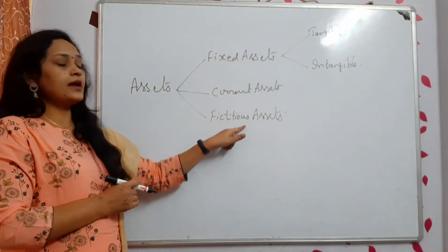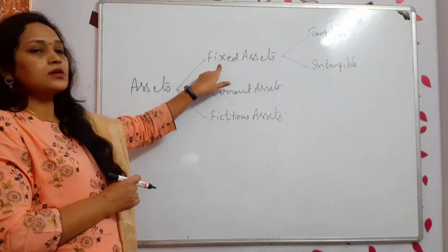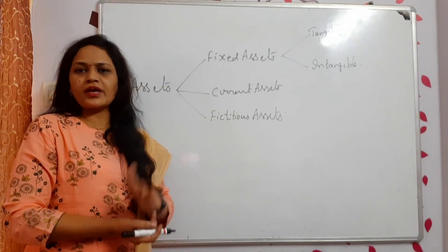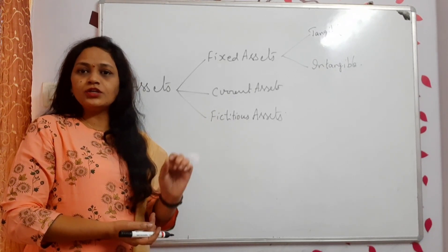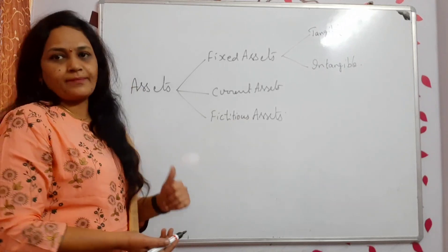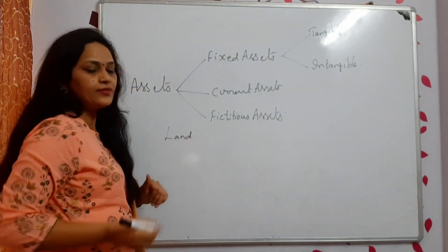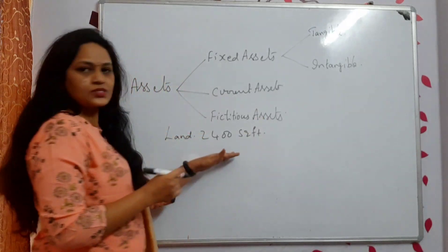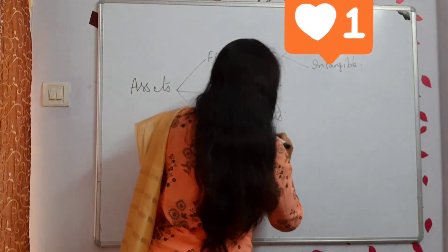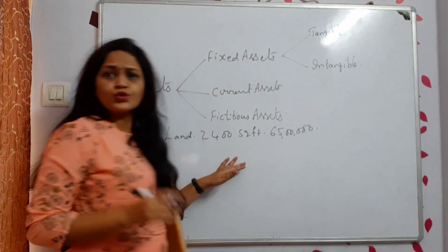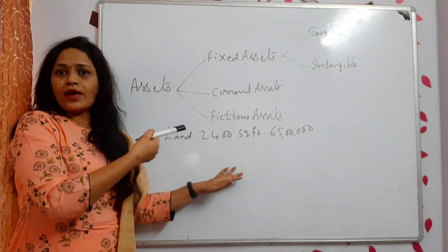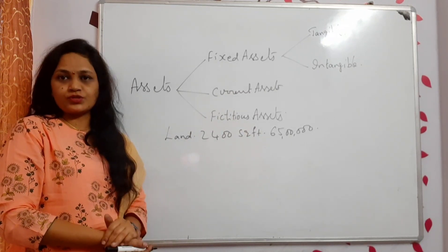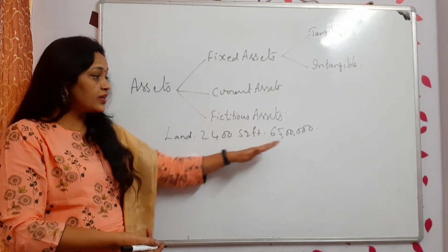The three types are fixed assets, current assets, and fictitious assets. Fixed assets are those which cannot be converted into cash immediately. For example, I am having land — I purchased land of 2400 square feet expecting a price of 65 lakhs. Do you think I can sell it by tomorrow? It is not at all possible.